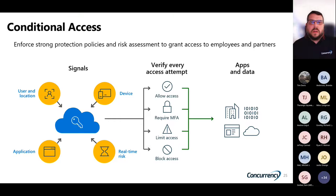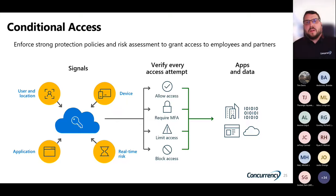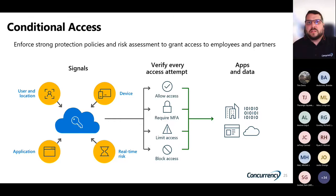Conditional access looks at all these different signals: who is the user, where are they coming in from, what device are they using, which application? It looks at real-time risk and figures out what to do — allow access, require MFA, limit access, block access, or force a password reset if necessary. Once it figures out everything is safe and it's the correct identity, it allows access to those apps and data.